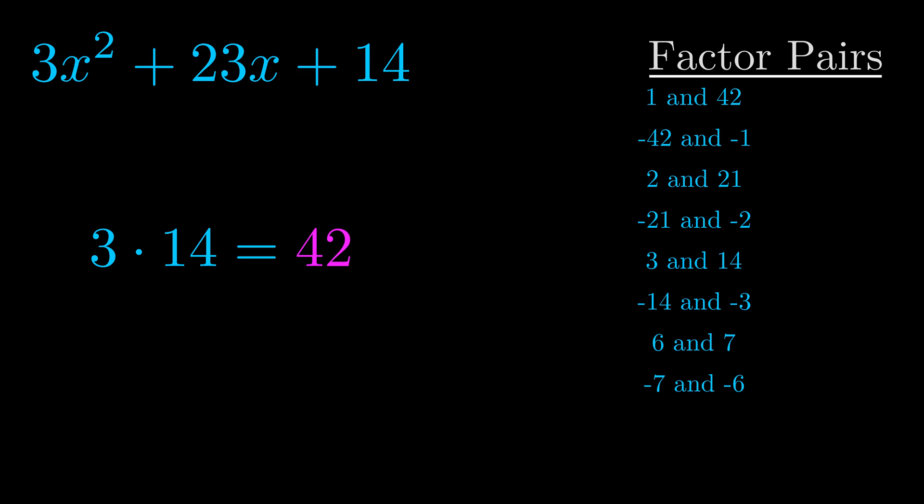The b value is the coefficient on the x term. That's the middle term, the one that we haven't done anything with yet. And really this is the only factor pair that we need.